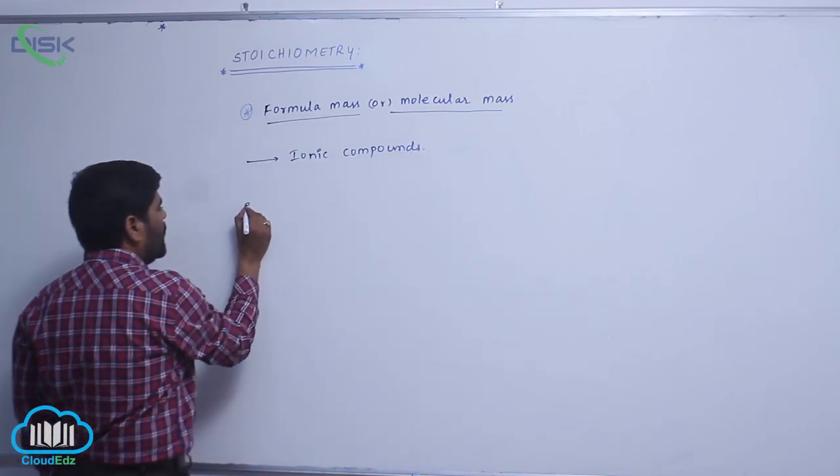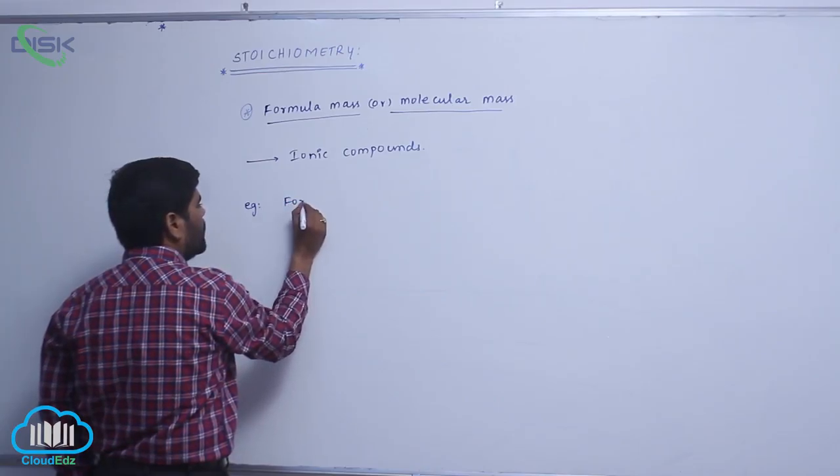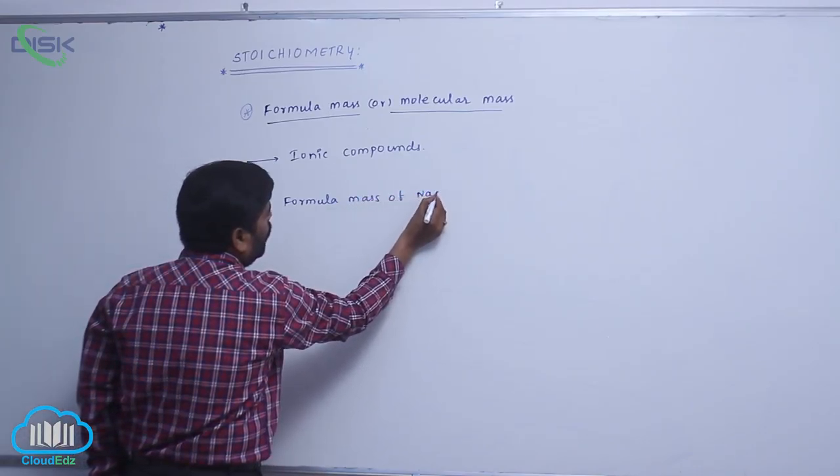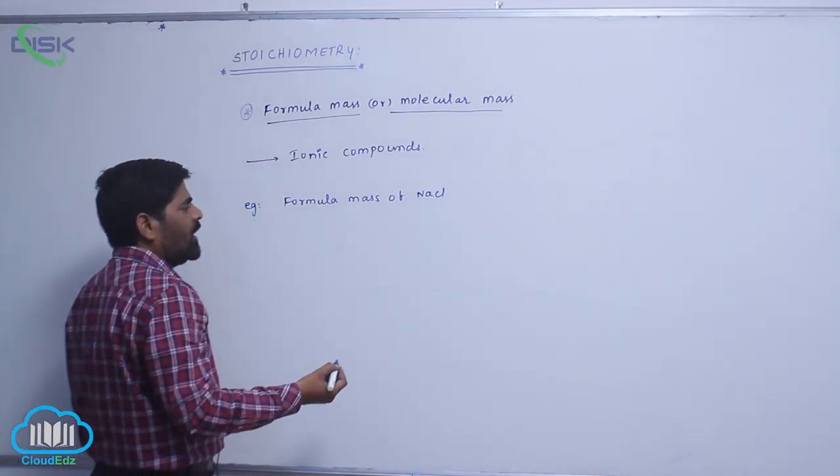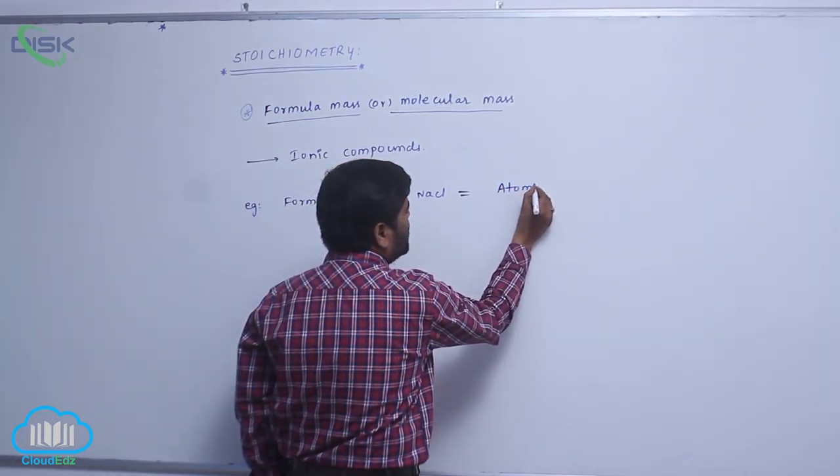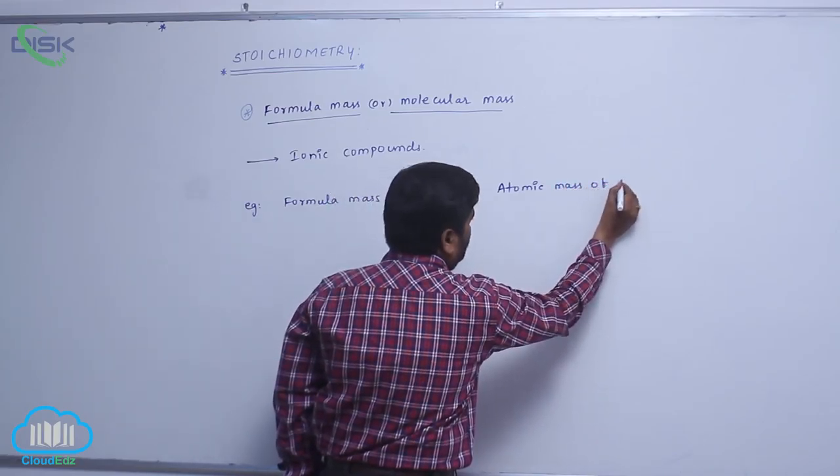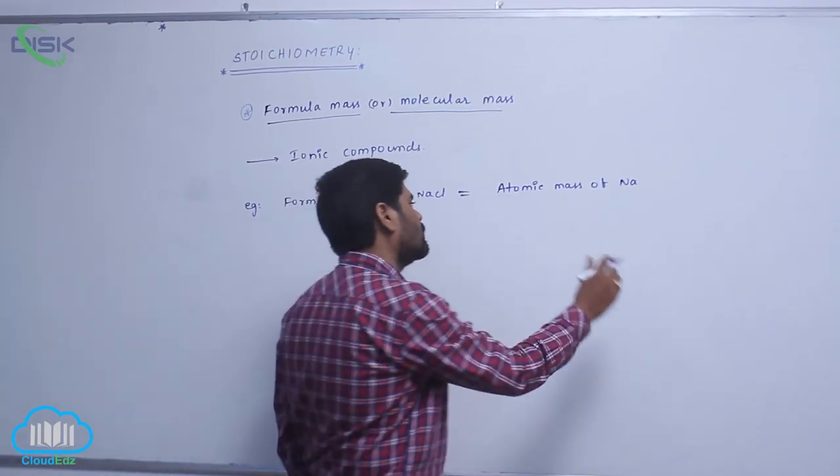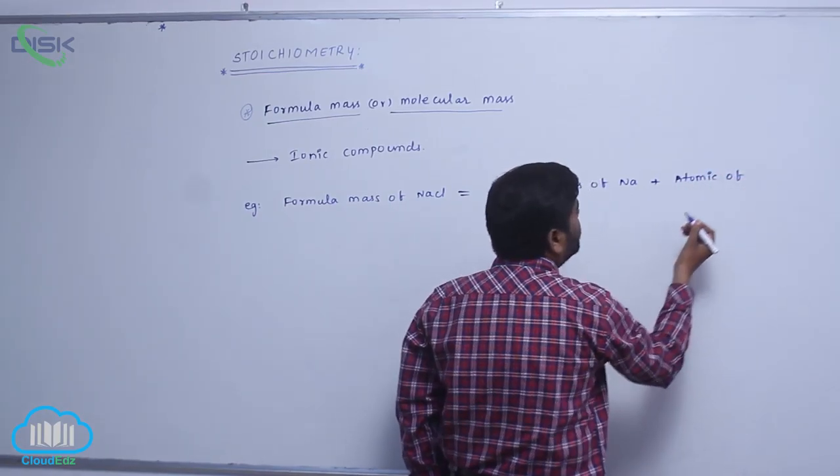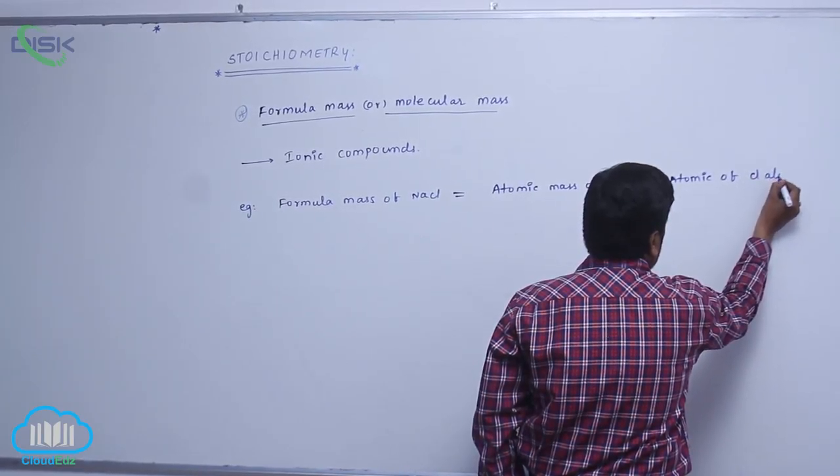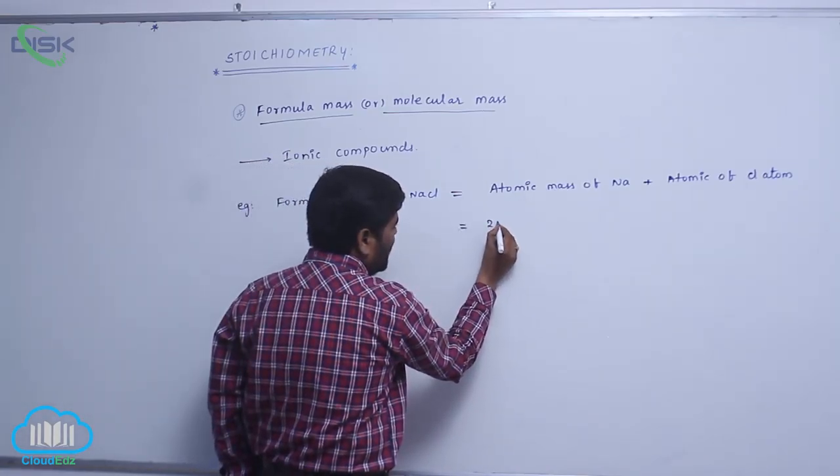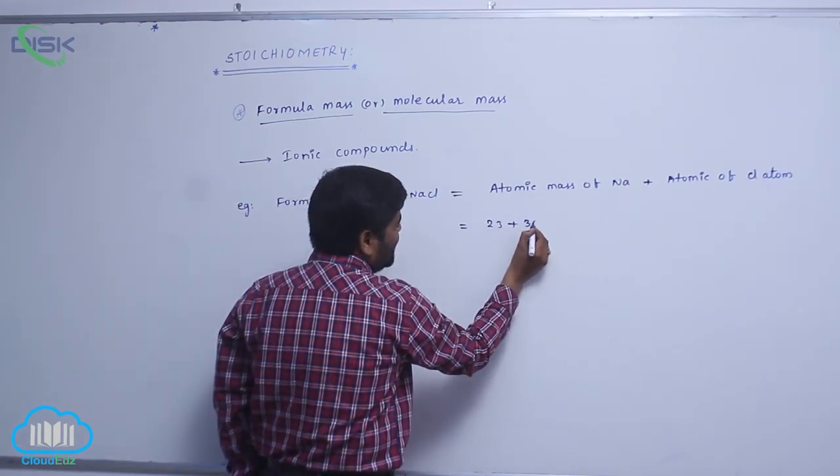For example, formula mass of sodium chloride equals to atomic mass of sodium plus atomic mass of chlorine atom. Atomic mass of sodium is 23, chlorine atom is 35.5.